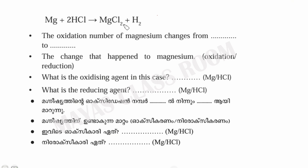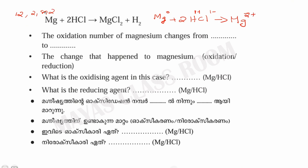The next question: Mg plus 2HCl gives MgCl2 plus H2. On the left side, Mg has oxidation number 0. In 2HCl, H is plus 1 and Cl is minus 1. In the products, MgCl2 has Mg as 2 plus and Cl as minus 1, and H2 has oxidation number 0.